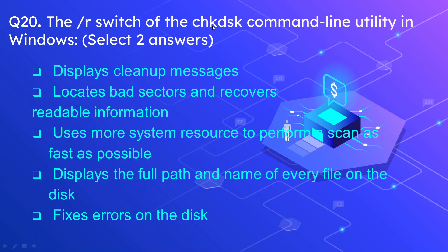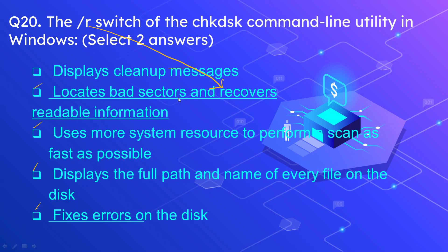Question 20: What does the /r switch of the chkdsk command line utility in Windows do? Select two answers. The options are: it displays cleanup messages; it locates bad sectors and recovers readable information; it uses more system resources to perform a scan as fast as possible; it displays the full path and name of every file on the disk; or it fixes errors on the disk. The correct answers are: it locates bad sectors and recovers readable information — R stands for recover — and it fixes errors on the disk.